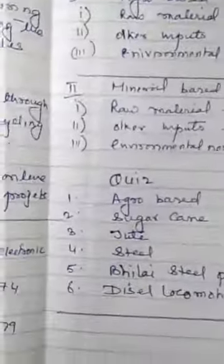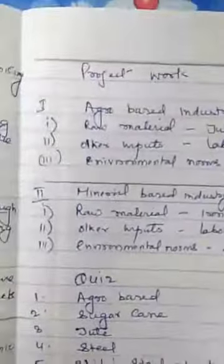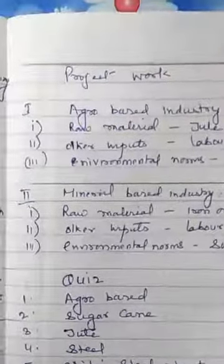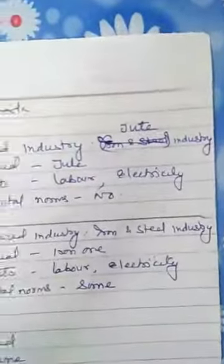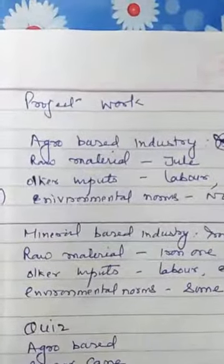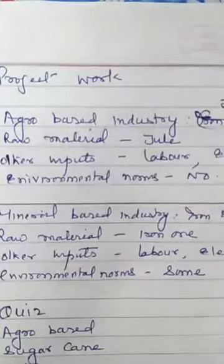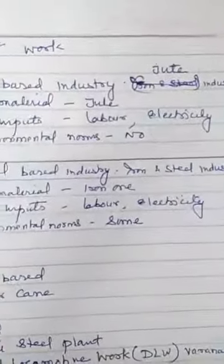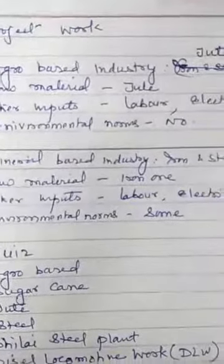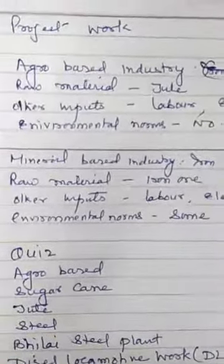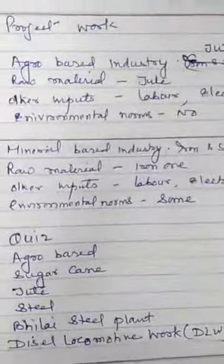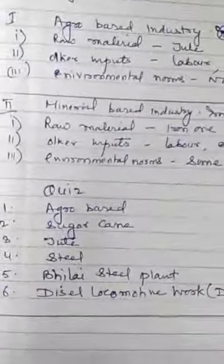For the project question below, select one agro-based industry and one mineral-based industry. For agro-based industry, take jute industry: raw materials required are jute, other inputs are labour and electricity, environmental norms — no. For mineral-based industry, take iron and steel industry: raw materials are iron ore, coal, limestone, and others; other inputs are labour and electricity; environmental norms — some follow them, some do not.